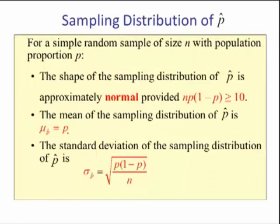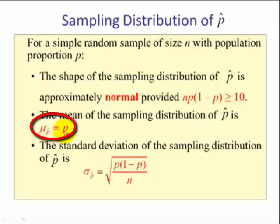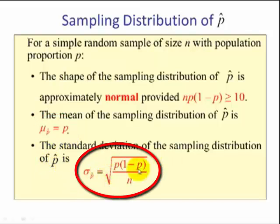For a simple random sample of size n for a population proportion p, the shape of the sampling distribution of p hat is normal provided that n times p times 1 minus p is greater than or equal to 10. This is a requirement for it to be normal. The mean of the sampling distribution of p hat is the average of all the p hats will equal the population proportion p. The standard deviation of the sampling distribution of p hat is given by the square root of p times 1 minus p divided by n.